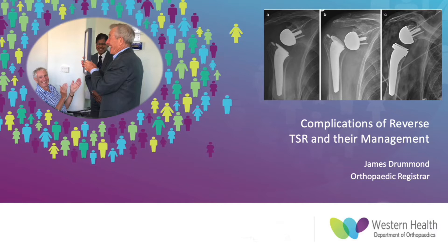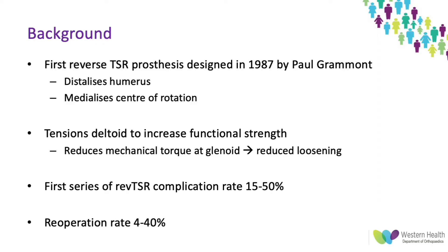Good morning everyone. Today I'll be talking about the complications of reverse total shoulder replacements and the management of these. The first reverse total shoulder prosthesis was designed by Paul Grimont, a Frenchman, back in 1987. The idea of the prosthesis is that it distalizes the humerus or the humeral shaft and medializes the central rotation, which aids to tension the deltoid muscle to become the functional muscle that moves the shoulder in patients that have a deficient rotator cuff.